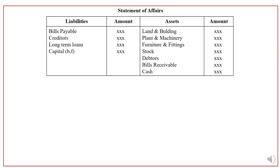By following this net worth method, the company will first prepare a statement of affairs. This is similar to a balance sheet, but we don't call it a balance sheet because these balances are not taken from ledger accounts. The company is not maintaining proper accounts, so this is called a statement of affairs. We prepare it on both the opening date and the closing date — the beginning and end of the year.